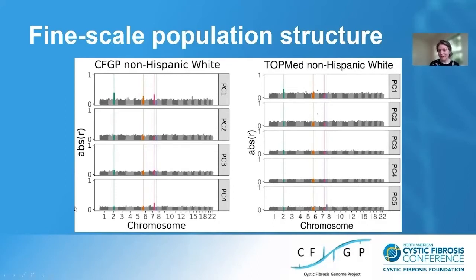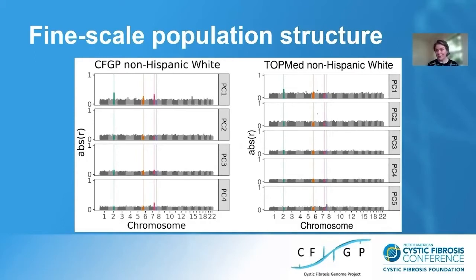Within the CFGP non-Hispanic whites, the first principal component is driven by variation at a handful of loci. Shown in green is variation near the lactase gene, orange is the HLA region, and pink is the CFTR region. Both lactase and HLA are known to be associated with population structure and geography within Europe, but you don't normally see CFTR showing up in those analyses. We obtained genome sequence data from a different study not ascertaining for cystic fibrosis — representing non-Hispanic white individuals — and saw an excess of correlation at lactase, but not at CFTR.